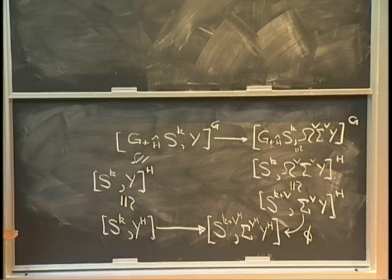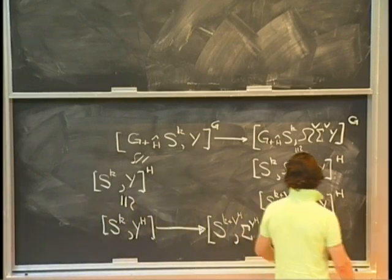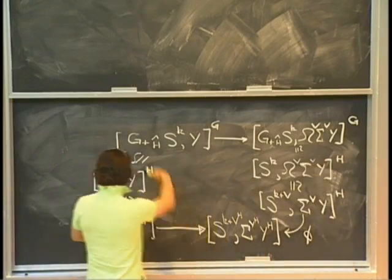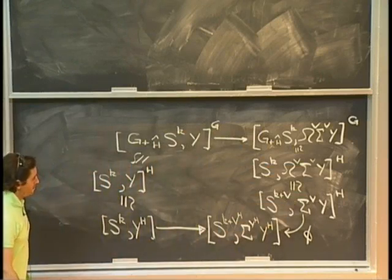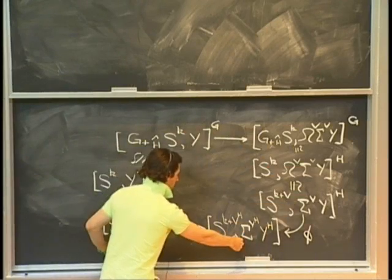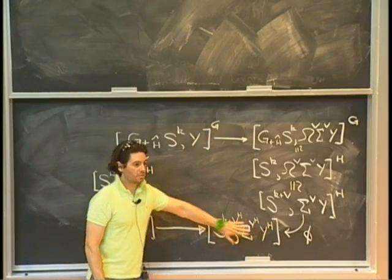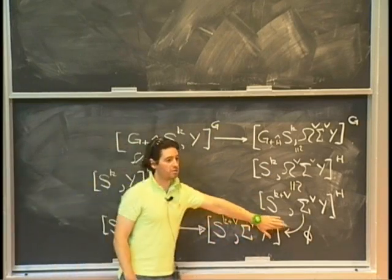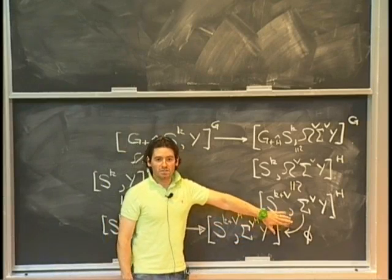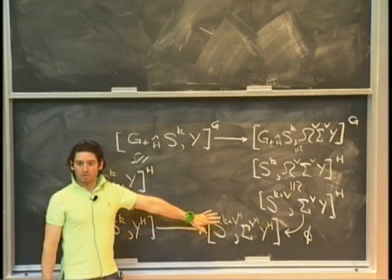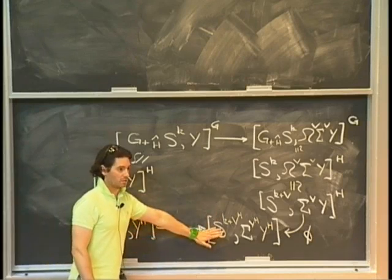The whole argument was just analyzing this diagram. Everything labeled as an isomorphism we'd already talked about. This map here was just the ordinary Freudenthal Suspension Theorem, because I don't have any adornment on my homotopy classes of maps — these are just ordinary homotopy classes of maps between two spaces, exactly the setup that Brooke spent a lot of time talking about.